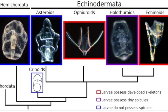They reproduce sexually through gametic fusion and asexually through the regeneration process. Usually their development is indirect, so they show larval forms. The echinoderm phylum is divided into two subphylums: first Pelmatozoa and second Eleutherozoa. Five total classes are present in echinoderms — first is Crinoidea, which comes under Pelmatozoa.